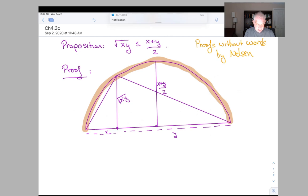And it's got diameter x plus y. So here's the diameter, it's x plus y. So its radius is x plus y over 2. So this is x plus y over 2. This is the average of x and y. So here's the radius.